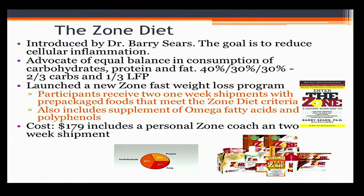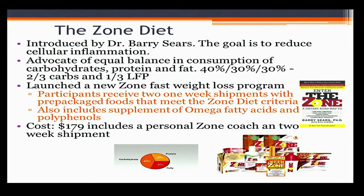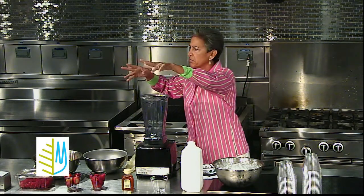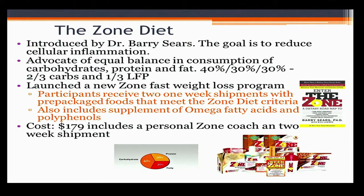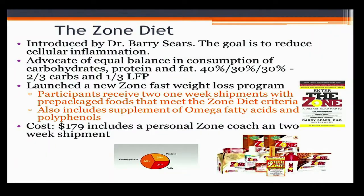The Zone Diet claims the goal is to reduce cellular inflammation — using technical-sounding language that confuses the average person. It doesn't make sense to consume 40% protein and 30% each of protein and fat. Why do we need so much protein? We only need 0.8 grams of protein per kilogram of body weight — that's 2.2 pounds. Women need about 40 to 50 grams; men maybe 60 to 70. That's it. We don't need protein shakes and protein bars. We're not going to the Olympics. The cost is $179 a week.